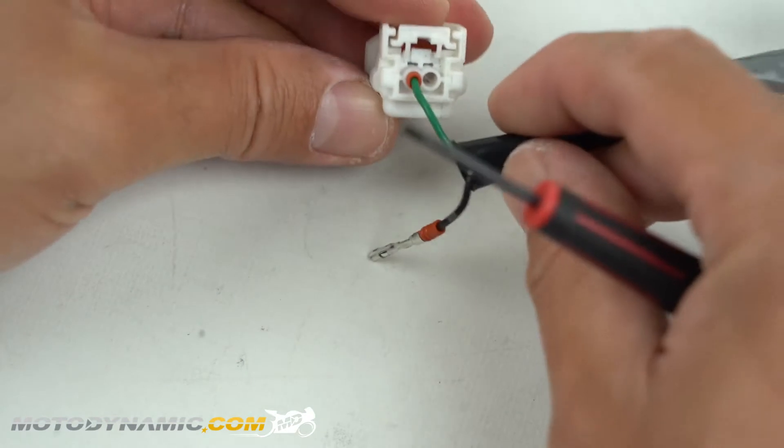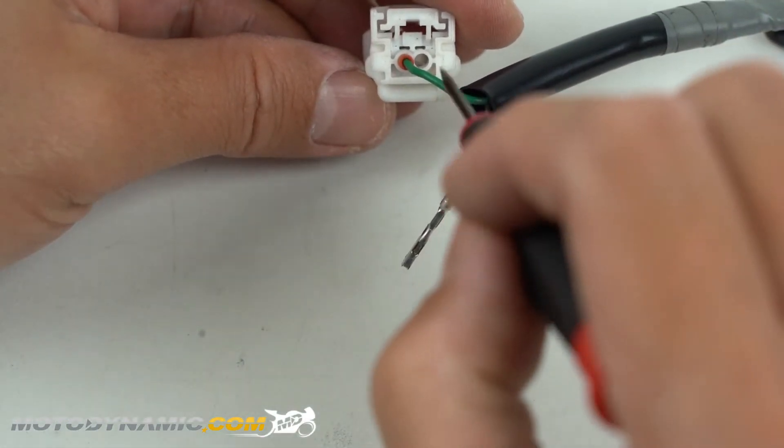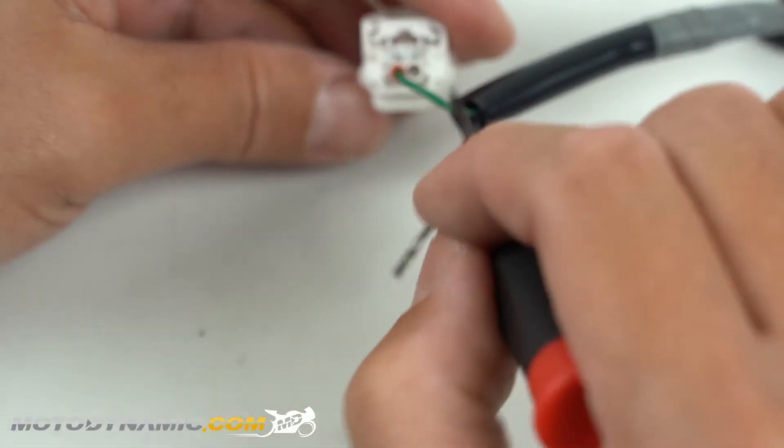You want to make sure you remember the order of the wires when you pull it out so you can put it back later. This one is the green one's on the left, the black one's on the right.